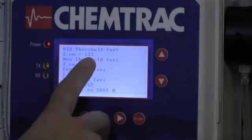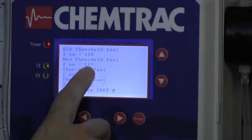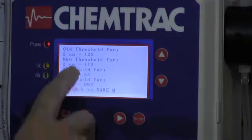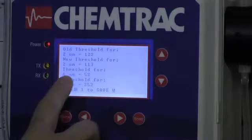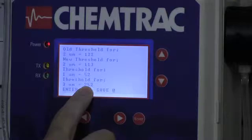It's going to show us what our old threshold value was, which was 122. Our new threshold value is 113, and it also tells us what the neighboring thresholds were. So 1 micron threshold, which we're not looking at 1 micron particles, but there is a threshold there for it. It's 52, and 3 micron is 252.